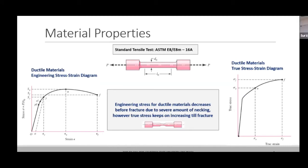Engineering stress for ductile materials decreases after ultimate stress due to severe necking, whereas true stress keeps on increasing because in true stress we take the actual area, which is getting reduced. That is why the true stress of ductile materials will keep on increasing after the ultimate point, while engineering stress after the ultimate point decreases, since you are considering the original area for calculations.